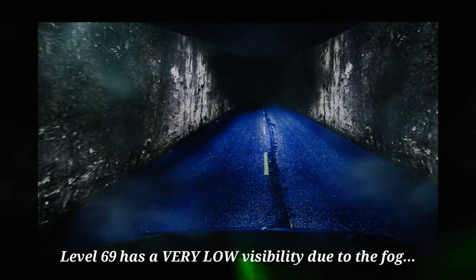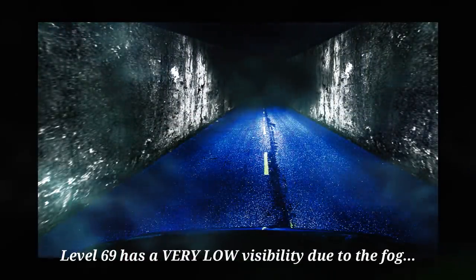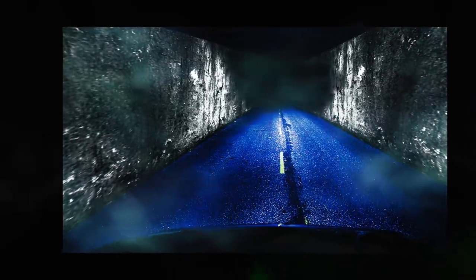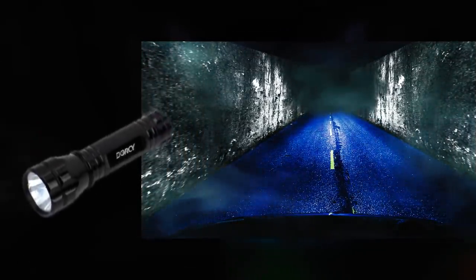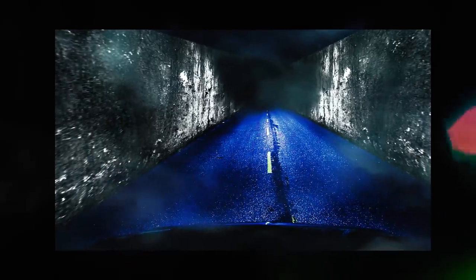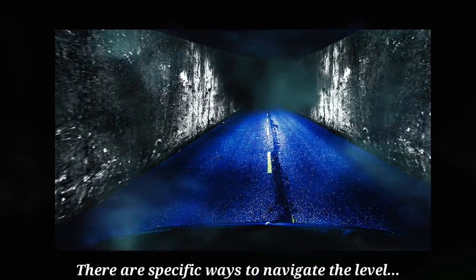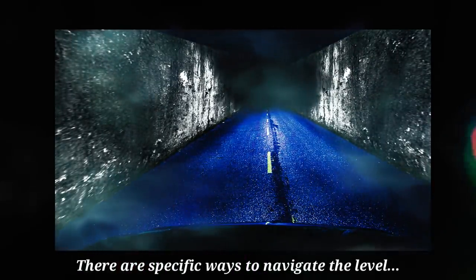Level 69 has a very low visibility because of the fog and the darkness that's on the level since it's constantly nighttime. In order to see anything at all, you have to use either the headlights from the car or a flashlight or something. This level is pretty unique because there are specific ways that you need to navigate it.